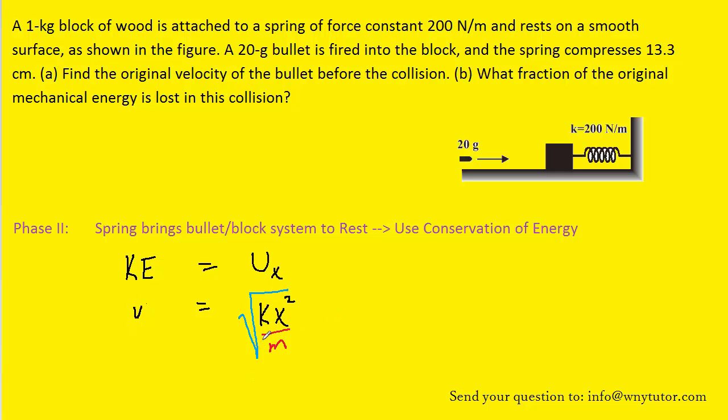We can now plug in the known values. The question stated k, which is the force constant, as being 200 newtons per meter. X is the distance by which the spring is compressed, and that was given to us as 13.3 centimeters. Notice that we have to convert that into meters, so when we plug that in, we need to make sure that that's 0.13 meters.